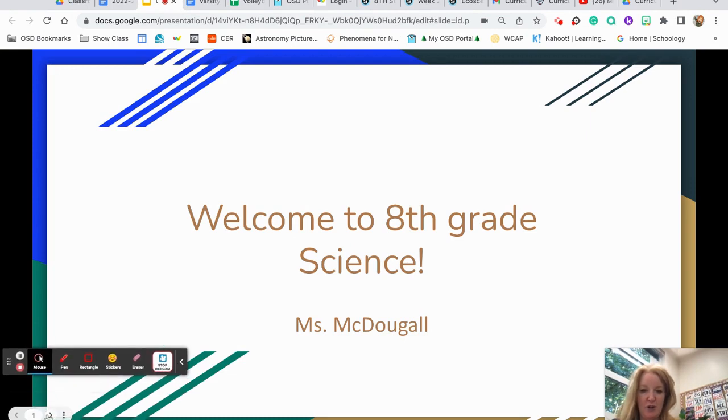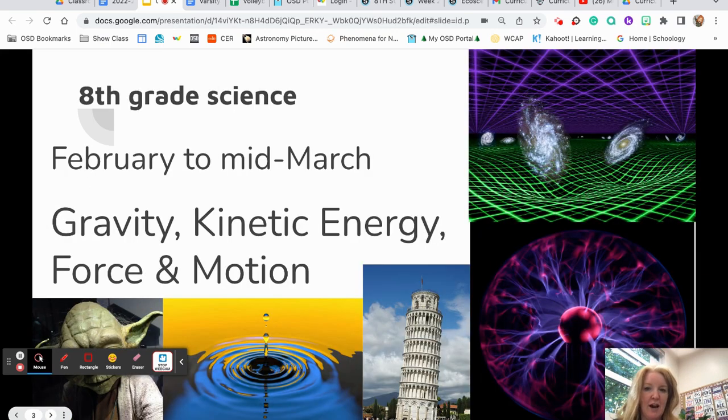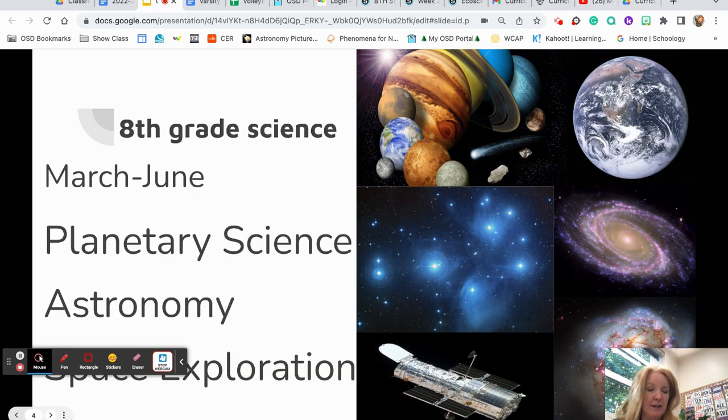And just jump right into it. The things that we'll be studying this year are populations, ecosystems, heredity slash genetics, and adaptation for pretty much the first half of the year. And we do a small unit or integrate this small unit into our last half of the year where we study planetary science or astronomy and space exploration, all high interest.